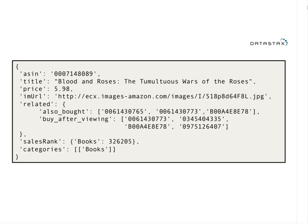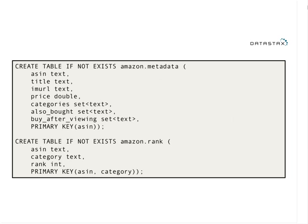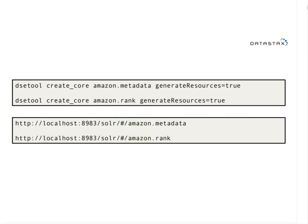For this demo, I'm using a dataset from Stanford containing all of the books from Amazon and all of their metadata. I turned that into a Cassandra column family and made it searchable. Here's the schema — a couple of fields as plain text, plus categories and also-bought as sets or collections within the Cassandra schema. After inserting the data, running DSE tool create-core creates a corresponding search core for this column family and spins up Tomcat with the corresponding URLs.